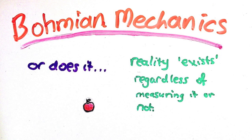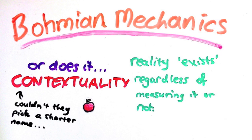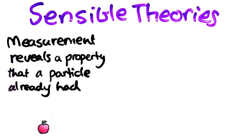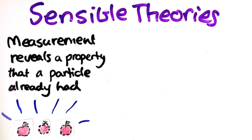Today we're going to look at a potentially big problem with Bohmian mechanics. The issue is something called contextuality. With any sensible theory, you want measurement to reveal a property that the particle already had, not create or change it.